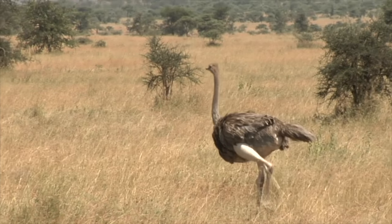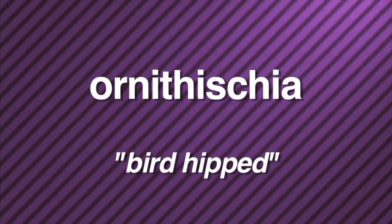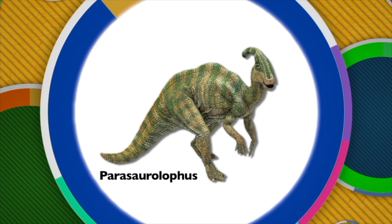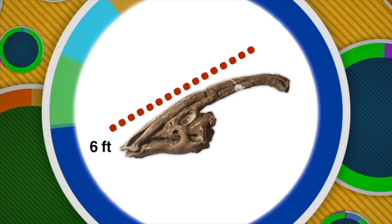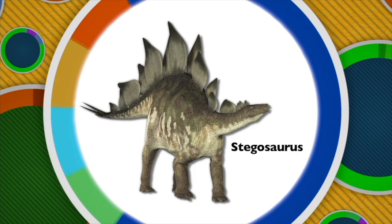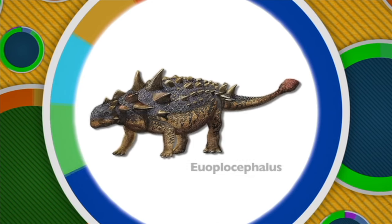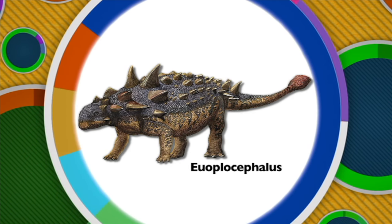Other dinosaurs had hips like modern day birds — their hip structure caused their legs to stick out from under their bodies. They're known as Ornithischia, which means bird-hipped. Ornithischian dinosaurs came in a wide variety of shapes and sizes and had very unusual features. Some, like Parasaurolophus, walked on two legs and are easily recognizable because of the hollow bony crest on top of the head that could measure up to six feet long. Stegosaurus is an Ornithischian that walked on four legs, with bony plates on its back as its most prominent feature. Euoplocephalus, another Ornithischian, also walked on four legs and could grow up to 25 feet long and 8 feet wide.